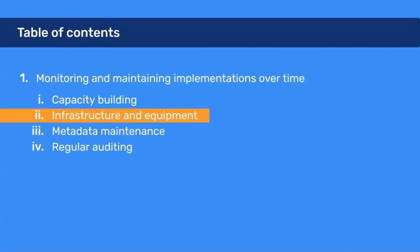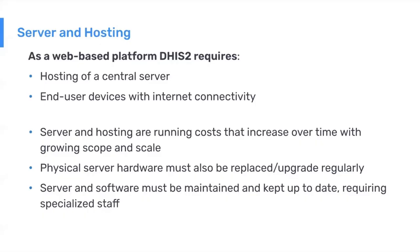Now we'll talk about infrastructure and equipment. DHIS2 is a web-based platform, which means there are essentially two equipment infrastructure components that need to be in place: a central server where the platform itself is hosted, and end user devices with internet connectivity. The server and hosting costs are an ongoing running task and cost that increases over time as the system grows both in scope and in scale.